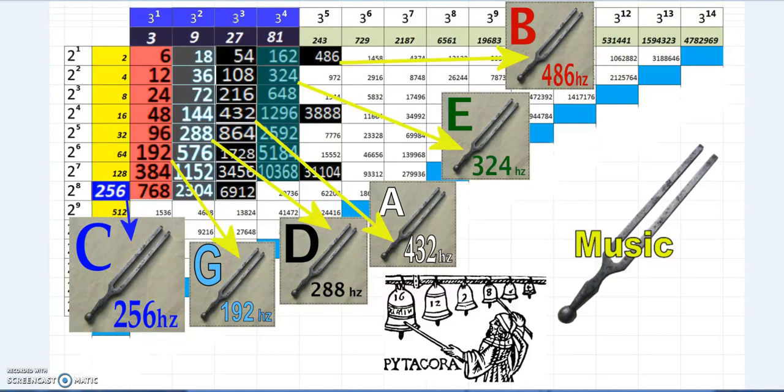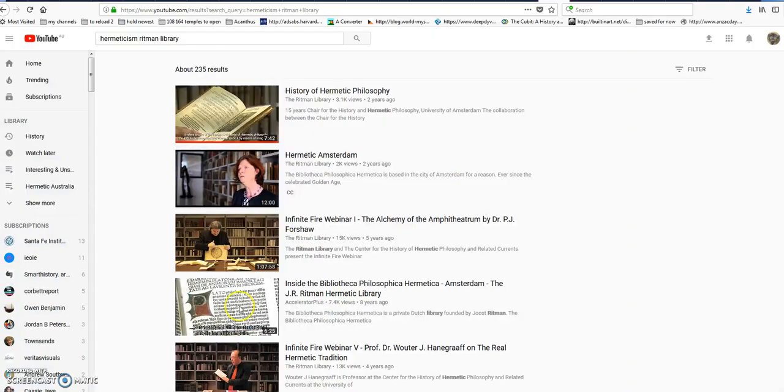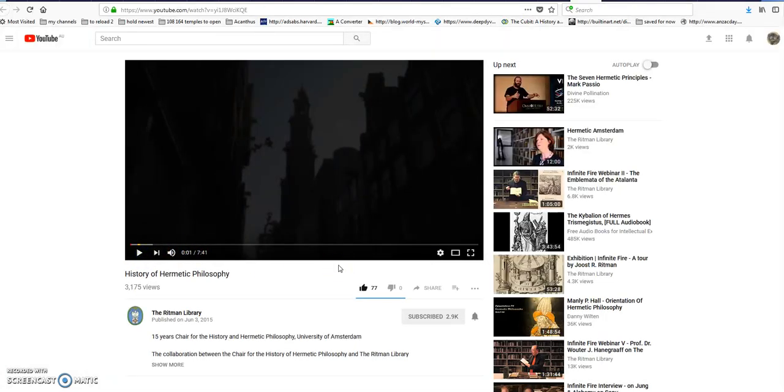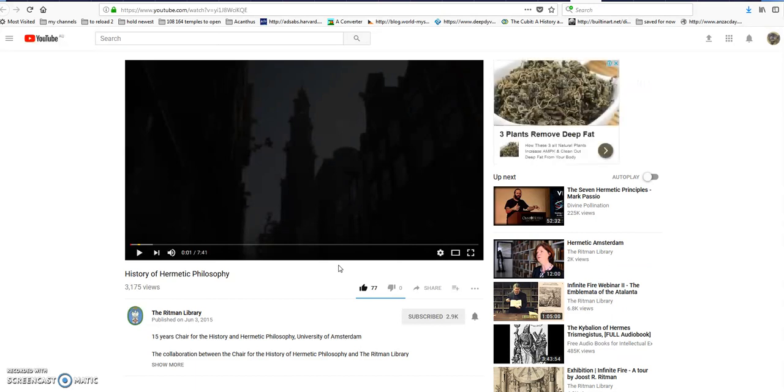I'll pause a moment to put the link in the description to this channel, the Ritman Library, which is the Hermetic Library in Amsterdam. Through the university there, they're studying hermeticism and the history of hermetic philosophy. It's very interesting because it points out that hermeticism has to do with the natural sciences. What we now think of as modern science emerged from these hermetic traditions, though we've lost our way a little bit.